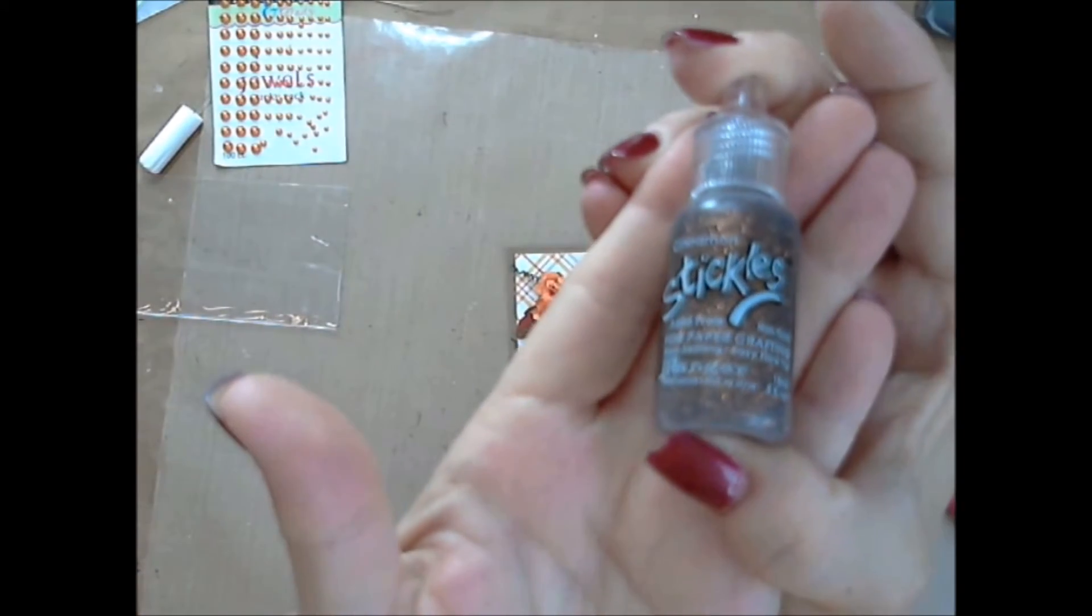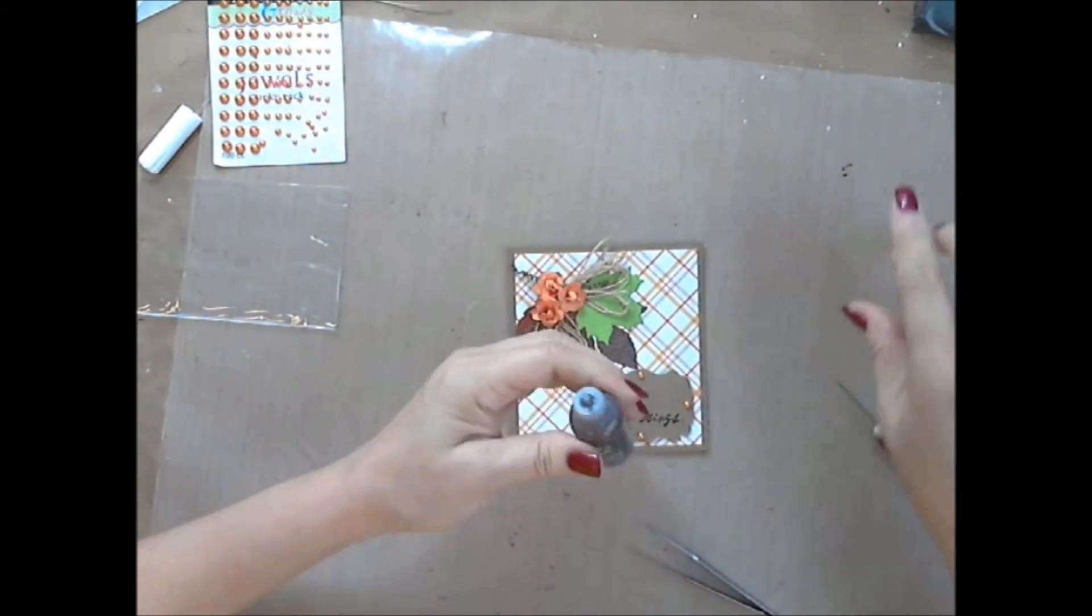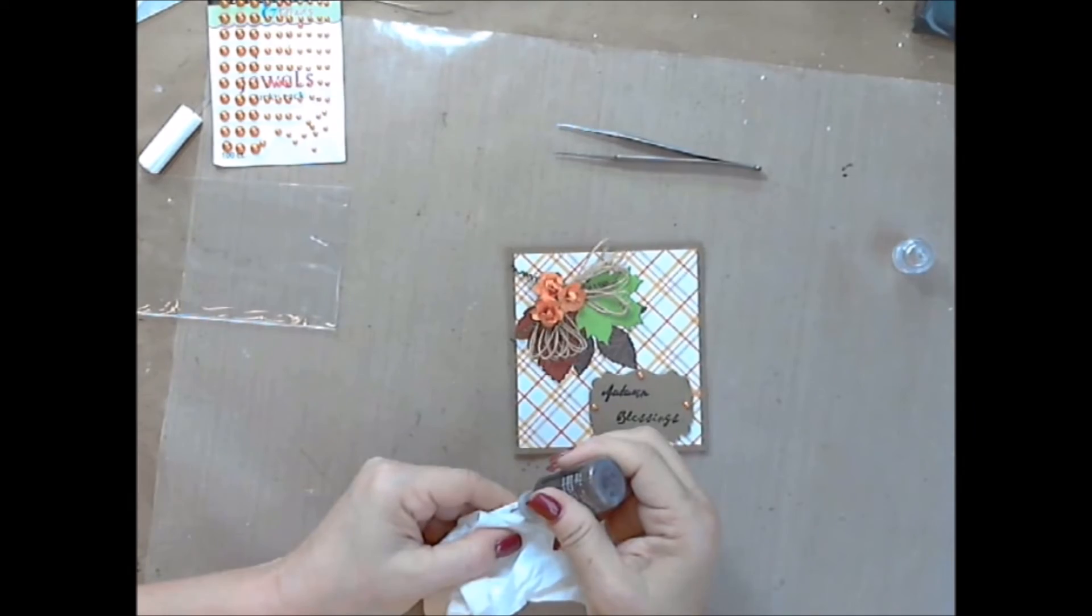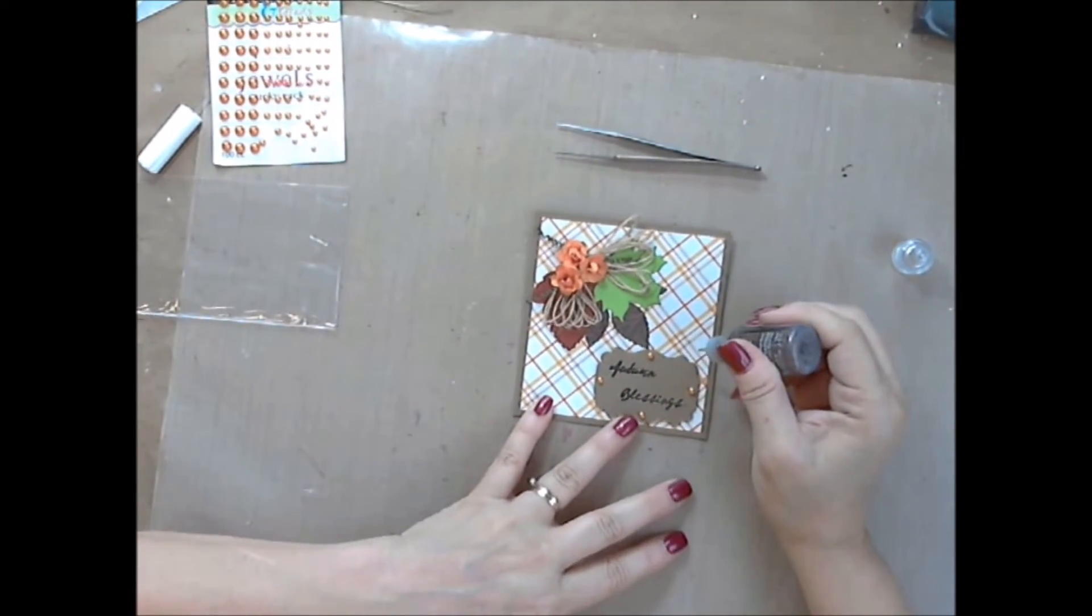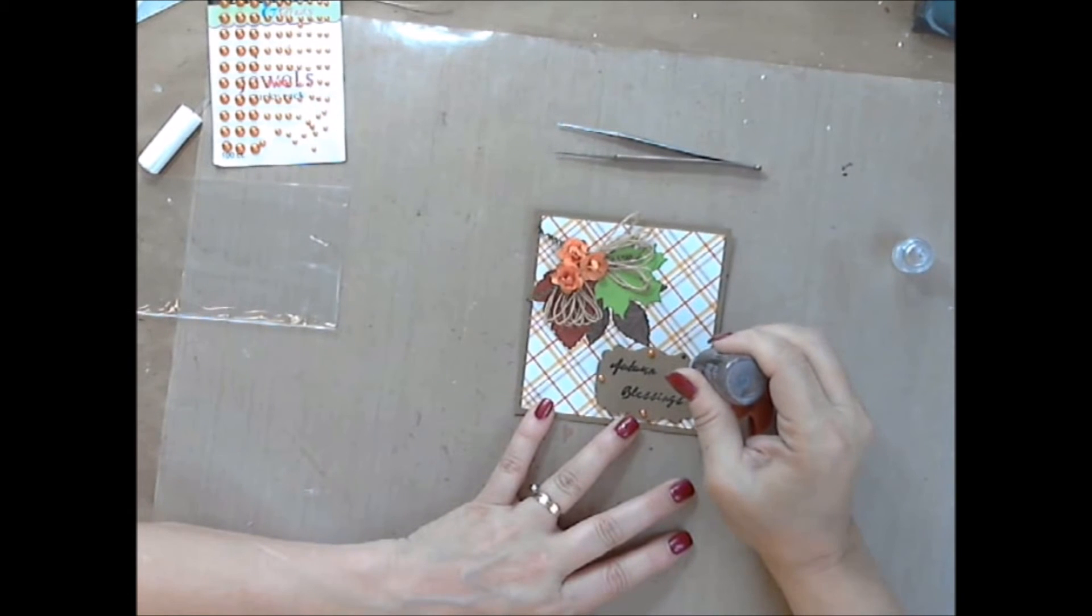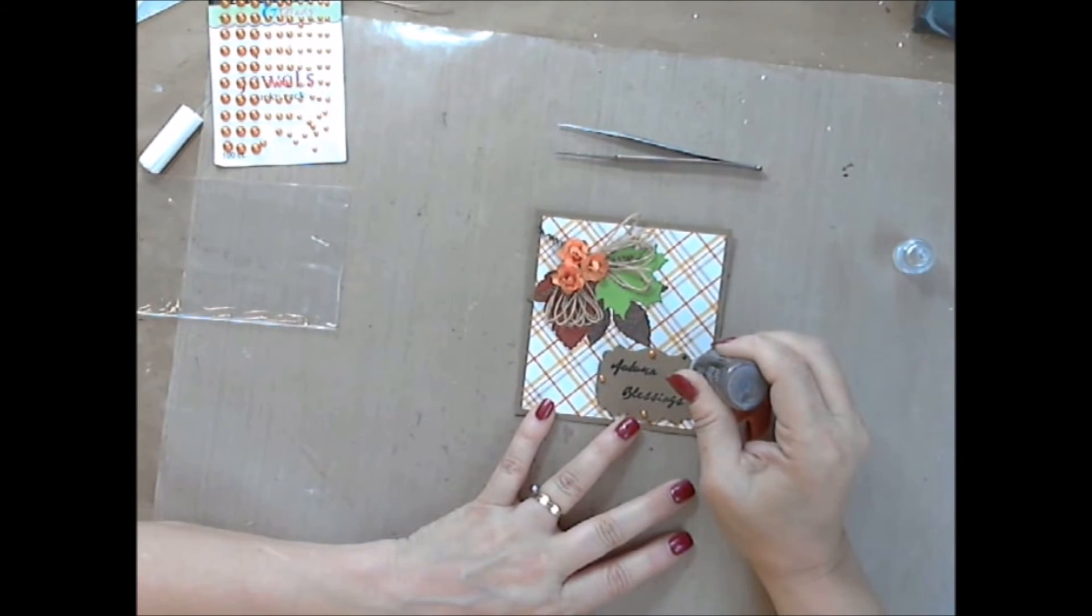Then I decided I wanted a little bit more glitter, so I took the cinnamon stickles that came in the kit and I'm going around in a couple spots in between the orange jewels, applying a couple little dots to give it some sparkle.